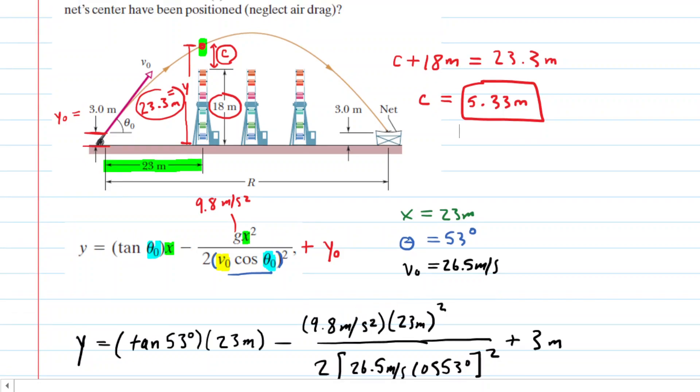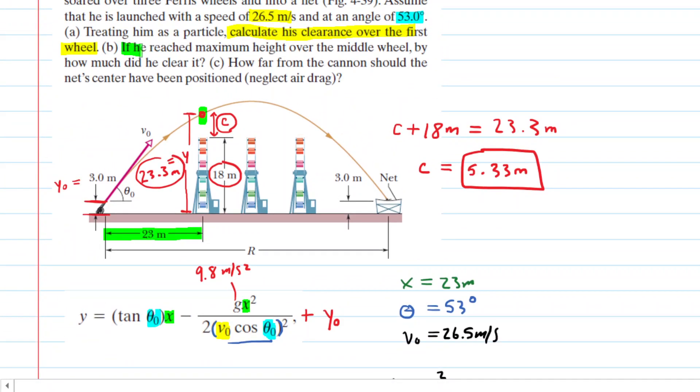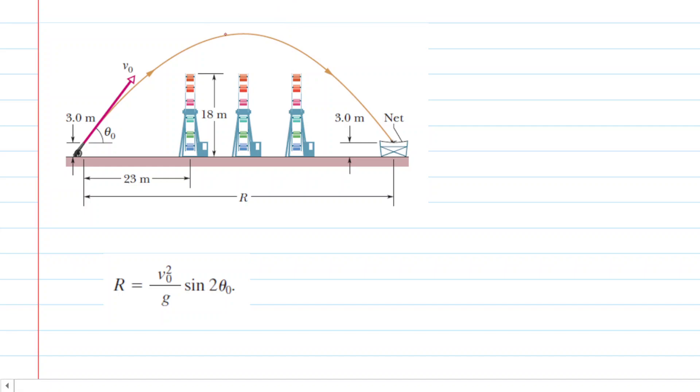Let's head over to part B. It says if he reached maximum height over the middle wheel, by how much did he clear it? Let's clean up the picture a little bit. This time the acrobat is located right here. We could use the trajectory equation again to find this height Y, just like we did before. But notice that to do that, we need to figure out how far the acrobat has traveled horizontally to that central Ferris wheel.